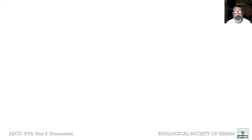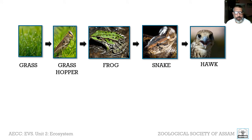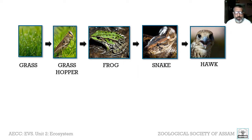Let us start with a very simple example. Grass is being fed upon by a grasshopper. Then we have a frog feeding upon the grasshopper, a snake feeding upon the frog, and then the hawk. Grasses are photosynthesizing and trapping solar energy, which is passed to other organisms in a stepwise manner. Along with energy, nutrients are also transferred from one organism to the other — from grass to grasshopper, from grasshopper to frog, and so on.